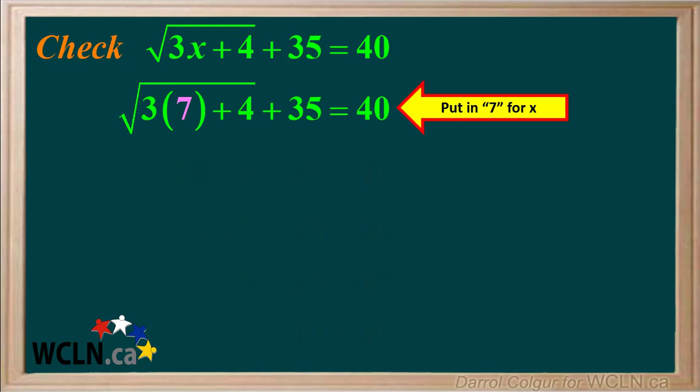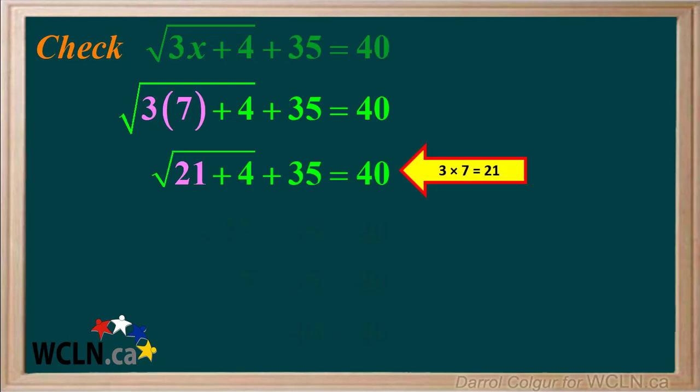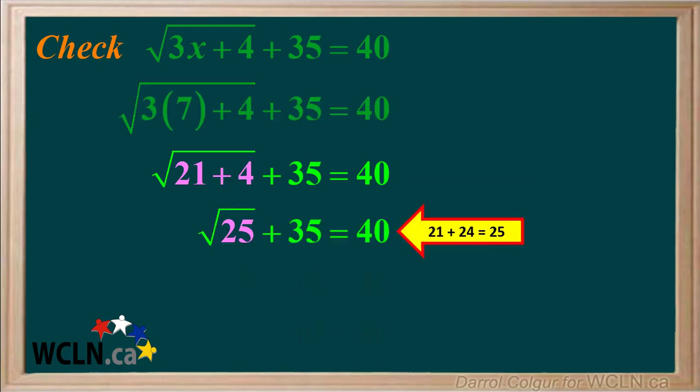Next we'll work inside the radical and multiply 3 times 7. 3 times 7 equals 21. Next we'll add the 21 plus 4 under the radical. 21 plus 4 equals 25.